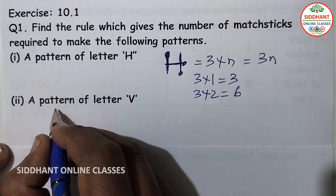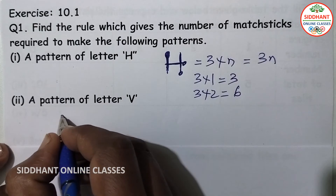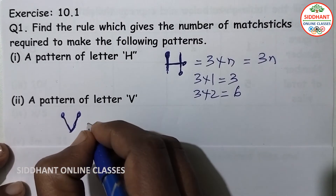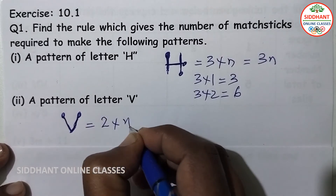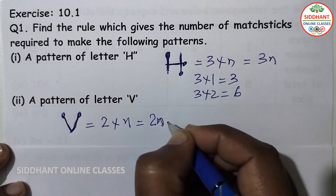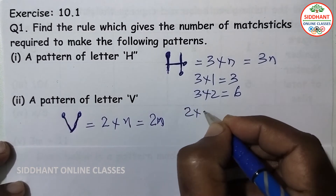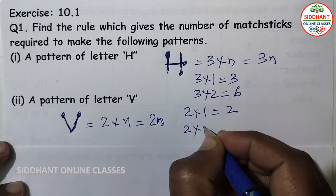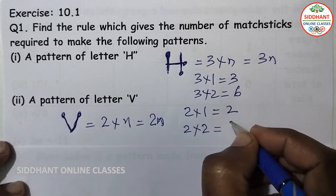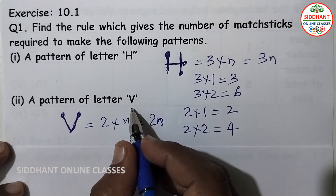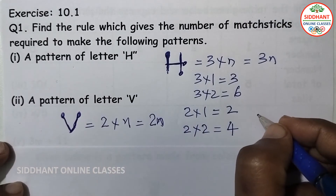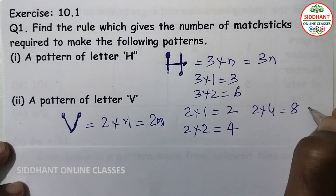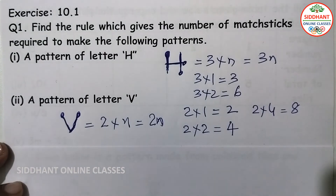In the same way, for a pattern of letter V, this is one matchstick and this is another matchstick — two matchsticks are required. So the expression is 2n. If you are going to write one letter, two into one means two matchsticks are required. If you write four letters, then 2 into 4 means eight matchsticks are required to write letter V.